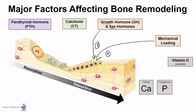Calcitonin is a hormone secreted by the thyroid gland. It plays an important role in blood calcium regulation. Specifically, it leads to storing of calcium through bone deposition — an increase in bone deposition, storing that calcium away — while also leading to a decrease in bone resorption to remove less calcium from the bone.